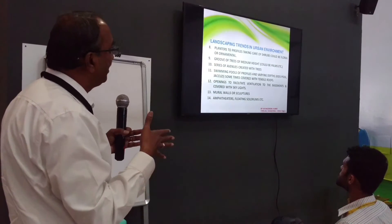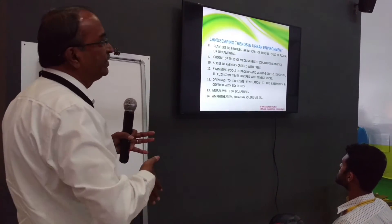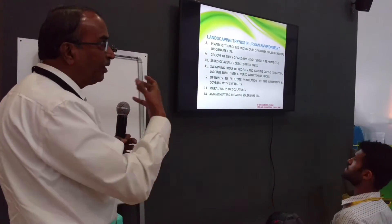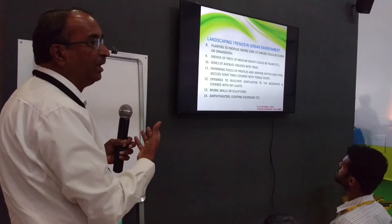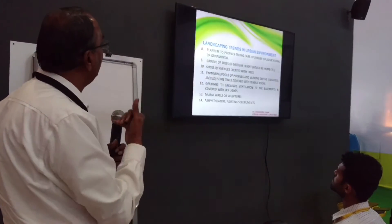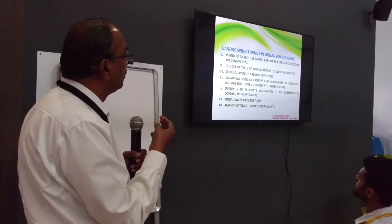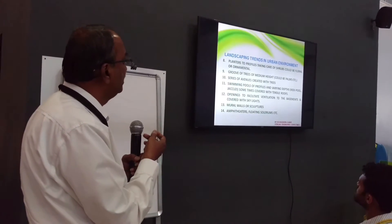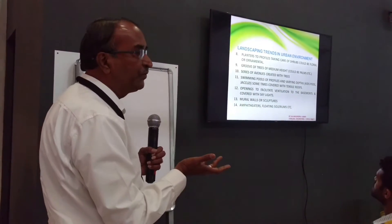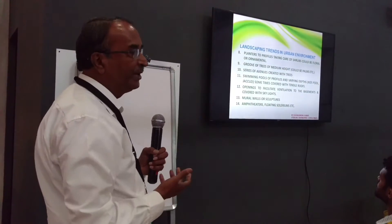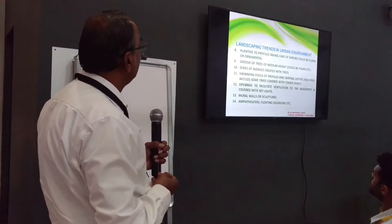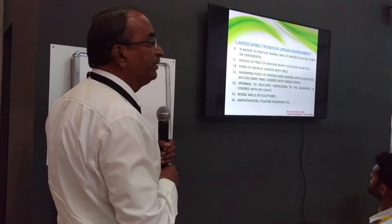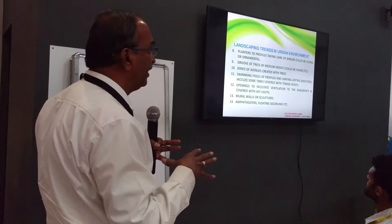Sometimes an avenue is created with trees on either side and a pathway, just to reflect what happens in nature. Swimming pools with various profiles and varying depths, like kids' pools and jacuzzis — sometimes covered with tensile roofs for aesthetic reasons. Then openings to facilitate ventilation to the basements, covered with skylights of various profiles and shapes.